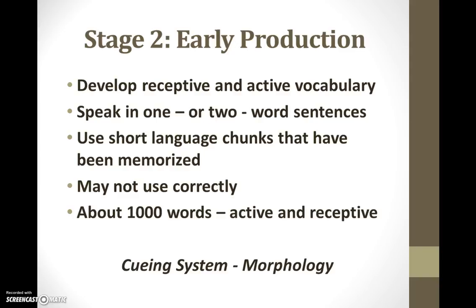The early production stage may last as long as six months. It is during this time the student develops a receptive and active vocabulary of approximately 1,000 words. This is the cueing system of morphology, where the learner is focusing on learning words. At this stage, they may speak in one or two word phrases. Many of these words and phrases have been memorized and may not always be correct. Effective strategies for working with these students include asking yes or no questions, or either/or questions, accepting one or two word responses, and opportunities for participation in whole class activities.